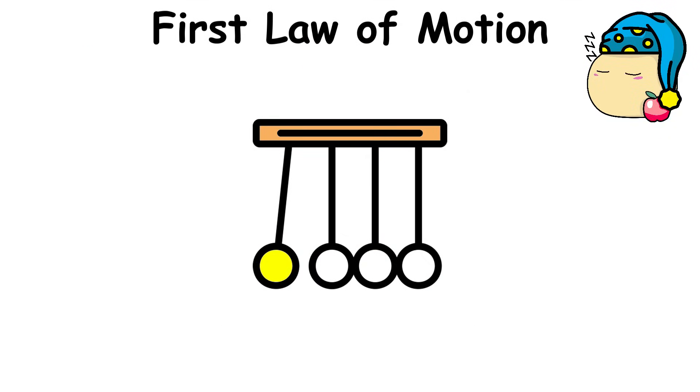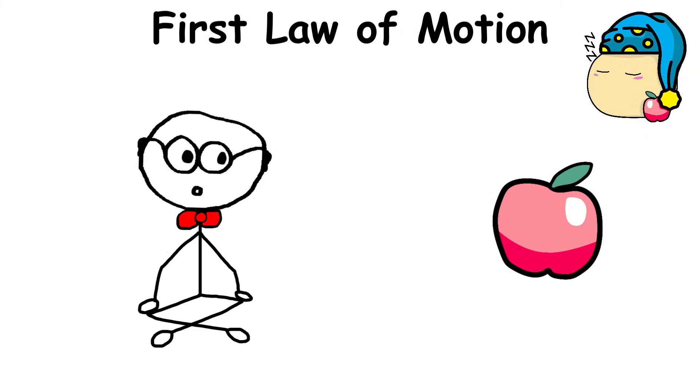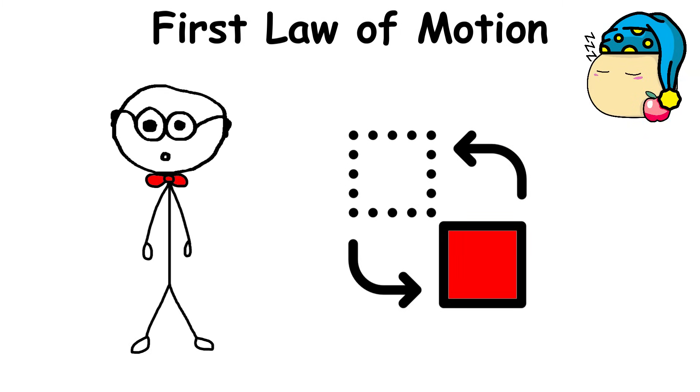Newton's First Law of Motion, also known as the Law of Inertia, states that every object will remain at rest or in uniform motion in a straight line unless compelled to change its state by the action of an external force.